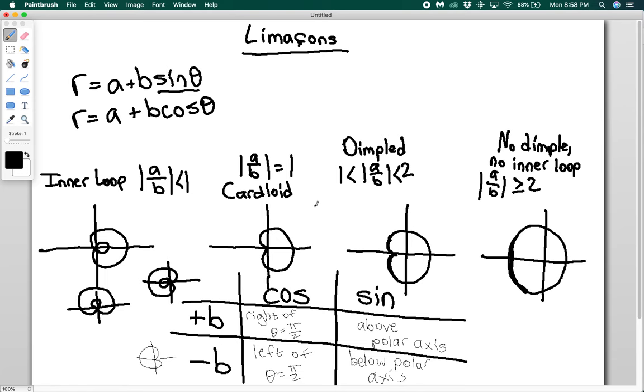So that's how you can graph limasons. And these ratios are useful to know to identify what kind of limason it's going to be, because we are going to be doing intersections of limasons. And it's going to be important to know, based on which limason it is, how many points of intersection that you expect. So tune in next time for more on intersections of limasons.